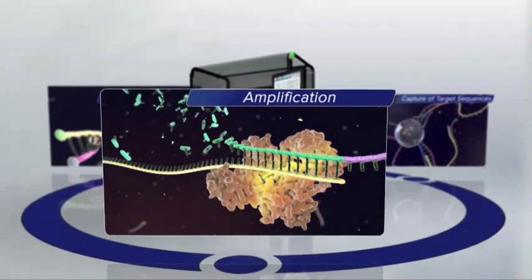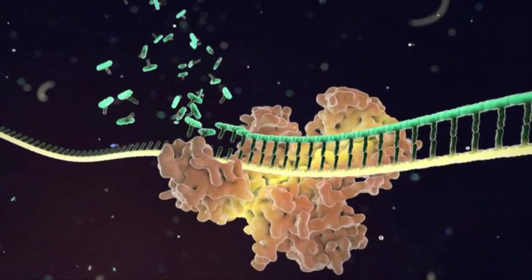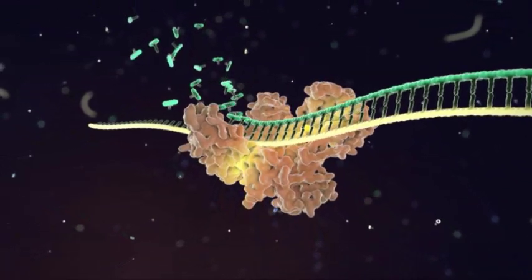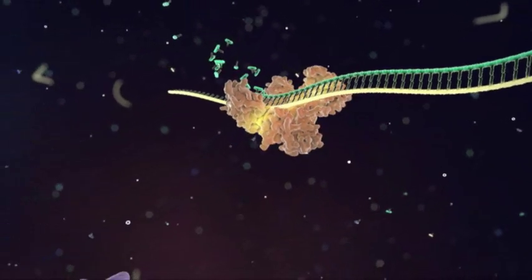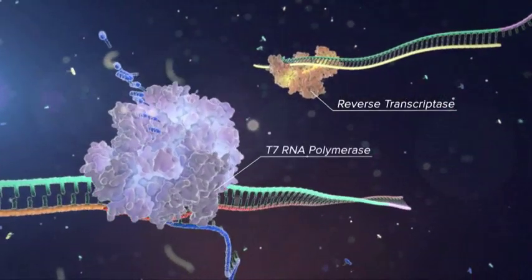Amplification of captured targeted sequences. Exponential and rapid amplification occurs through successive iterations of reactions which utilize two enzymes: reverse transcriptase and T7 RNA polymerase.